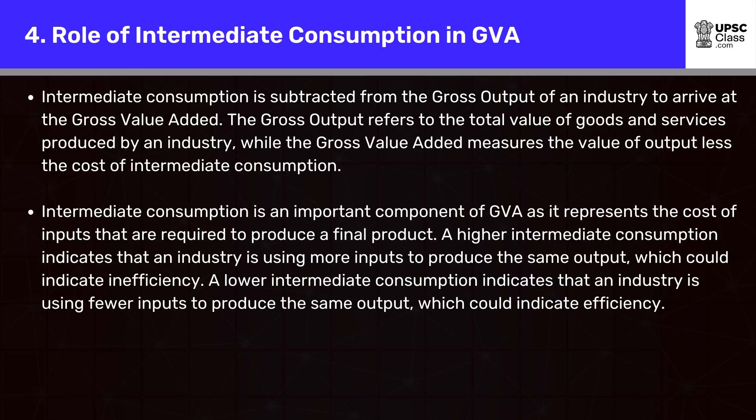Role of Intermediate Consumption in GVA: Intermediate consumption is subtracted from the gross output of an industry to arrive at the gross value added. The gross output refers to the total value of goods and services produced by an industry, while the gross value added measures the value of output less the cost of intermediate consumption. Intermediate consumption is an important component of GVA as it represents the cost of inputs that are required to produce a final product.